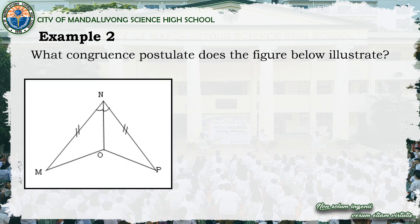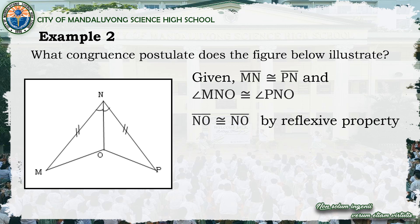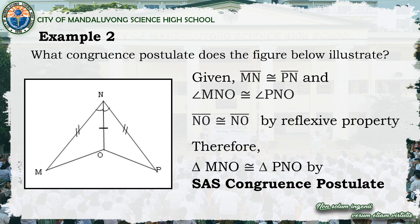Example number two: what congruence postulate does the figure illustrate? We have triangle MNO and triangle PNO, wherein NO is their common side. Based on the marks, side MN is congruent to side PN, and angle MNO is congruent to angle PNO. Since NO is the common side, side NO is congruent to side NO by reflexive property. Therefore, triangle MNO is congruent to triangle PNO by SAS congruence postulate.